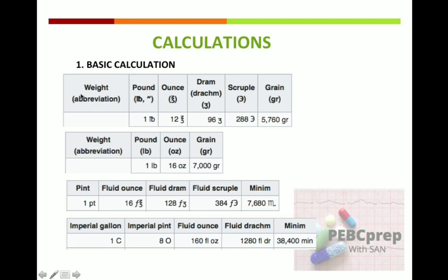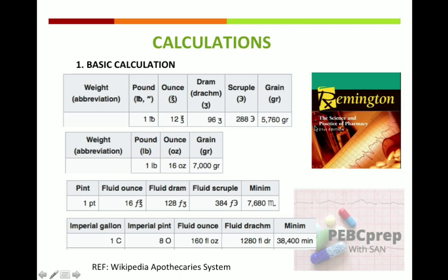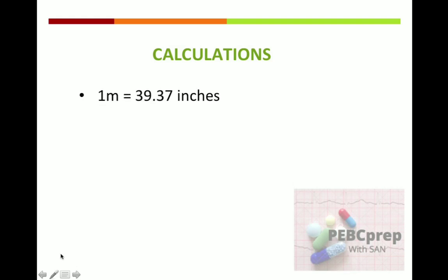First of all, you have to remember these apothecaries and avoirdupois values — for example, one pound, ounce, scruple, drams, then fluid ounce, fluid dram, fluid scruple, and minims. These values are a little different than what I learned when I was in pharmacy, but the reference for these values is Wikipedia. I'll give the link in the description box. In Remington you will find slightly different values, but it's been 10 years since I was in pharmacy so things change.